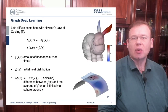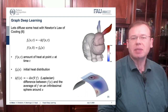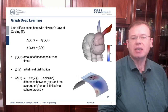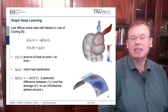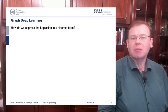So let's diffuse some heat. We can describe Newton's law of cooling with the following equation: the development over time can be described with the Laplacian. So f(x, t) is the amount of heat at point x at time t. You need to have an initial heat distribution — you need to know how the heat is in the zero state — and then you can use the Laplacian to express how the system behaves over time.